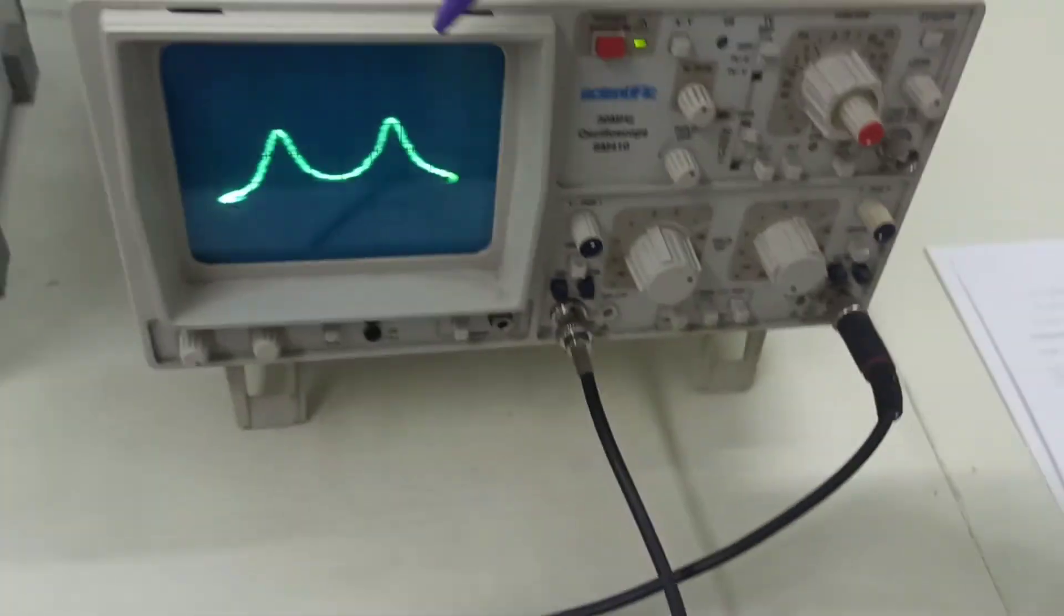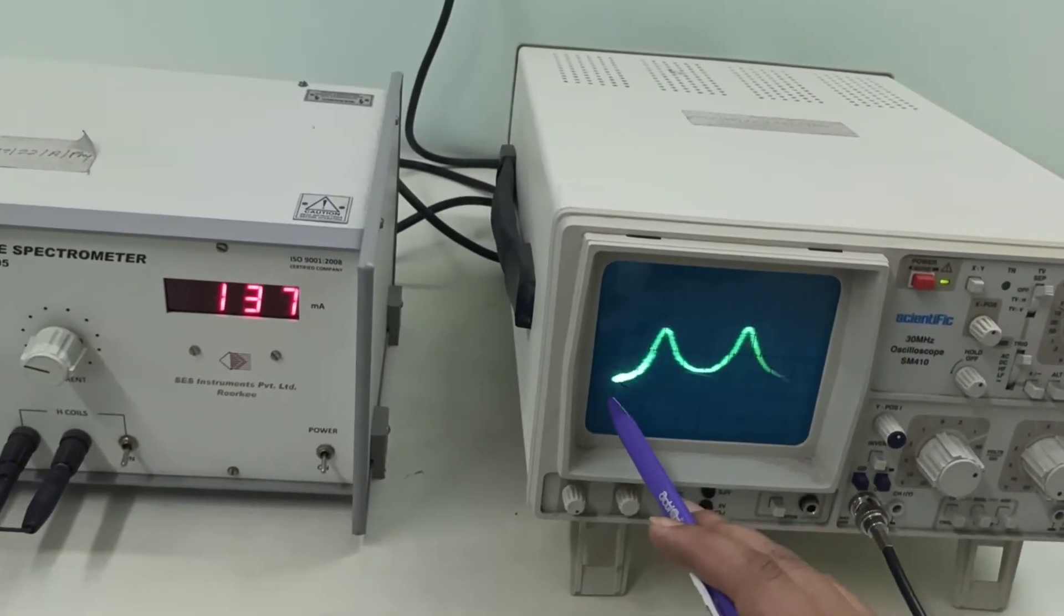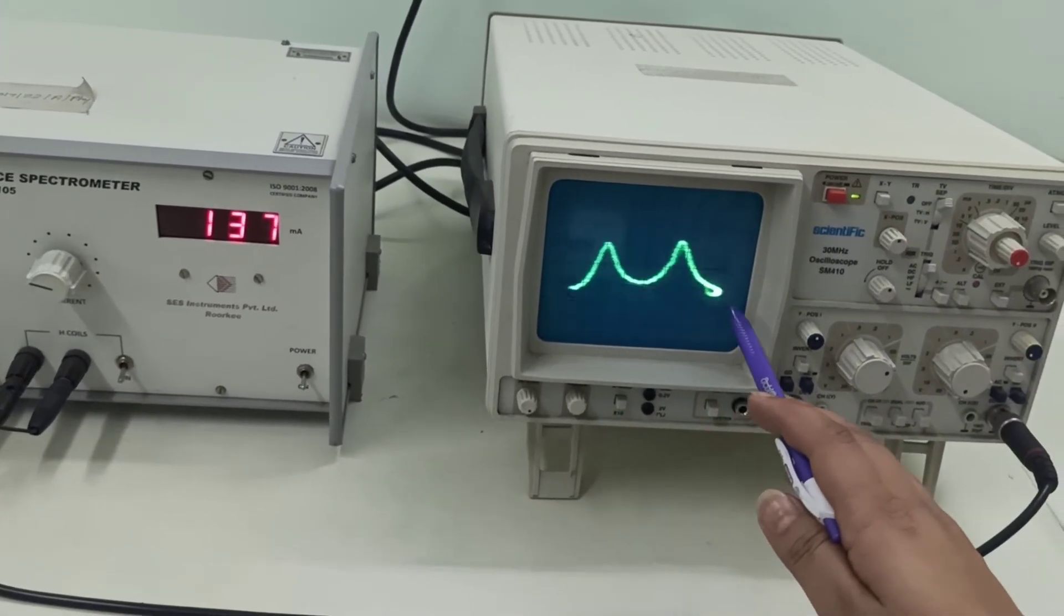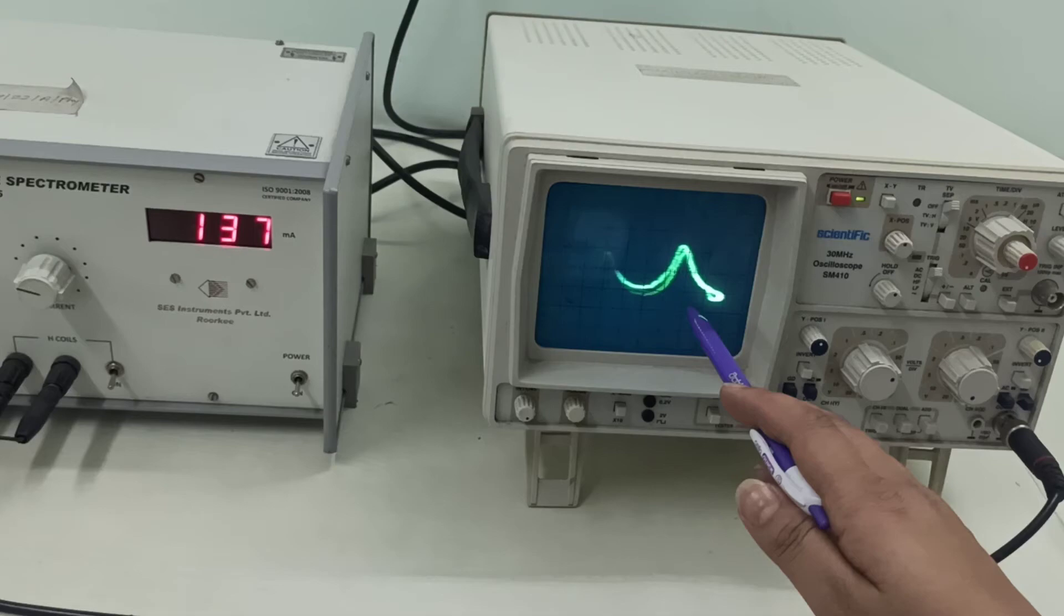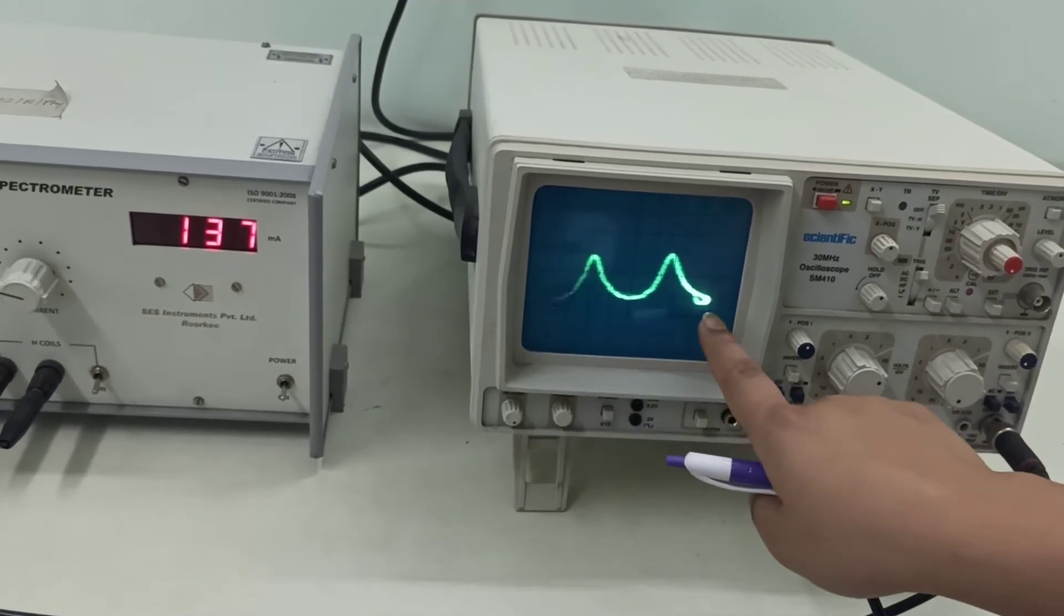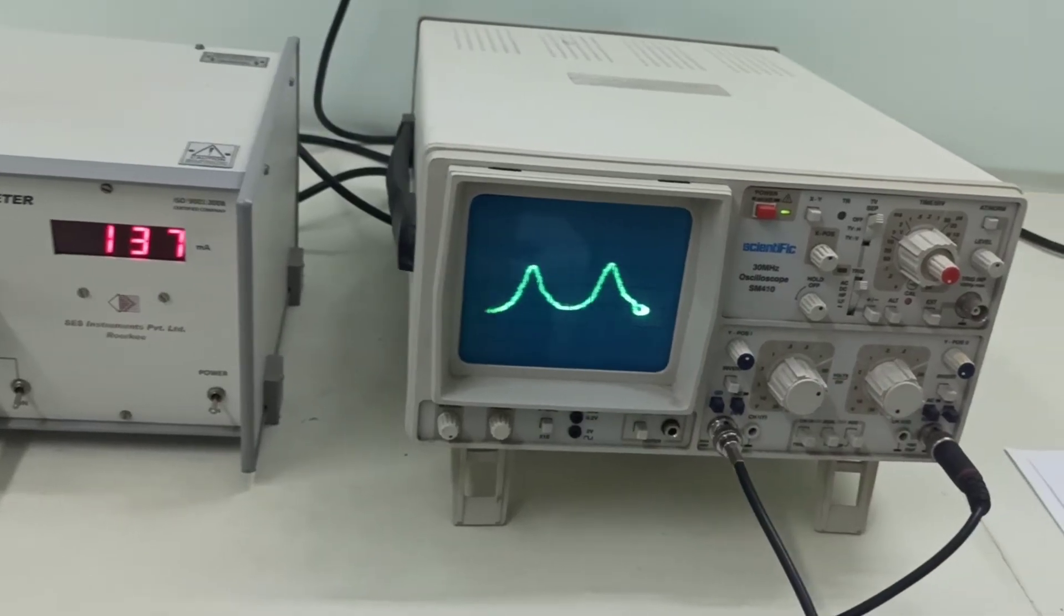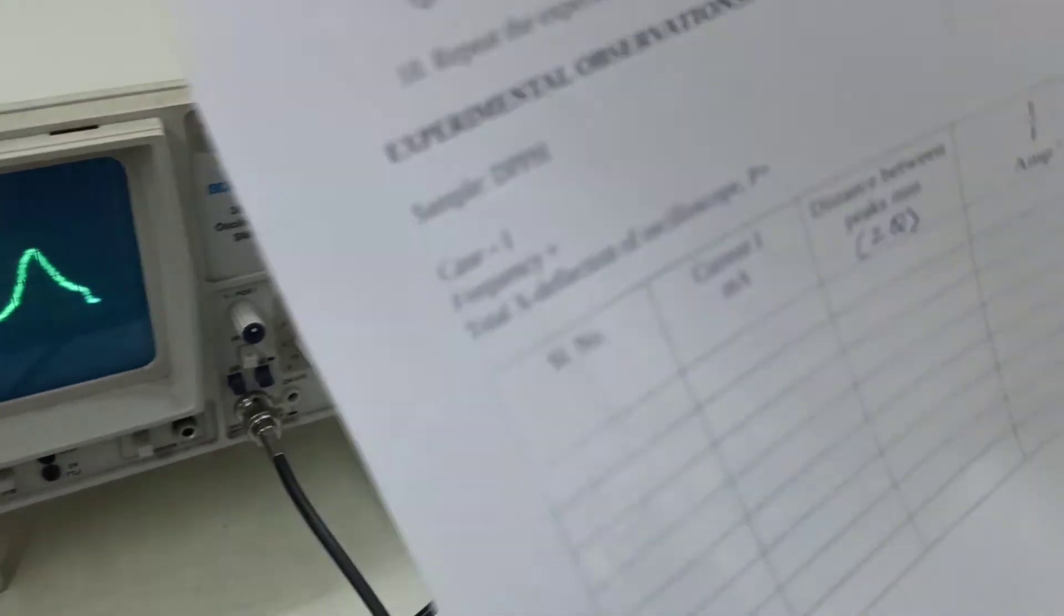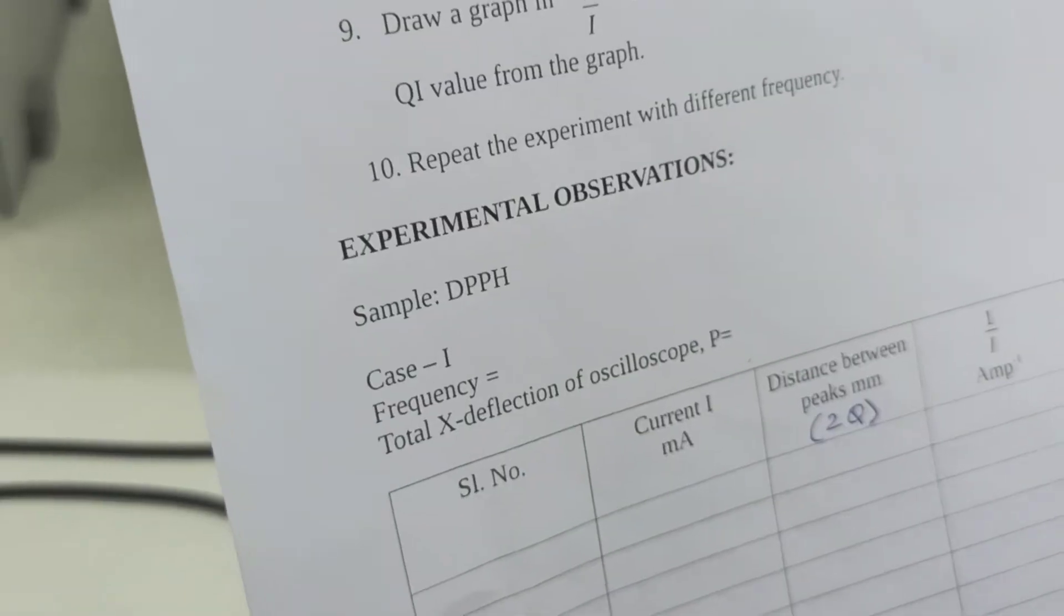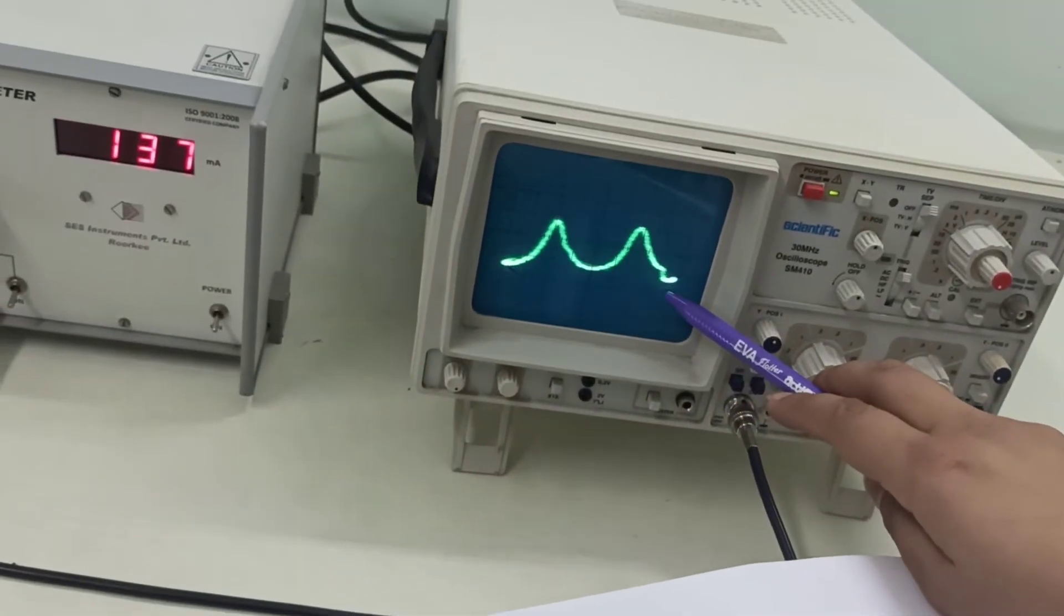Here, P is this distance. From distance from here to here is your P distance, or it is called your x deflection of your oscilloscope, the one which you see here. This distance is P.